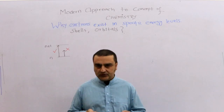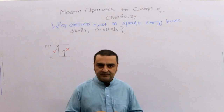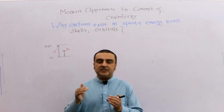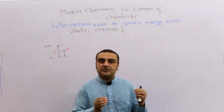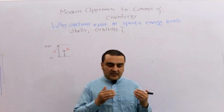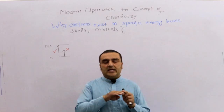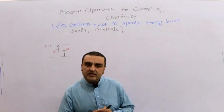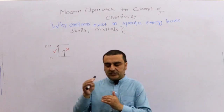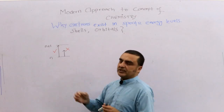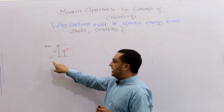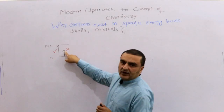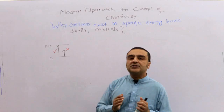Assalamu alaikum. I welcome all of you to the modern approach to the concept of chemistry. Today we will be studying why electrons exist at fixed energy levels and do not exist between those energy levels — just like why electrons are present in s, p, and d orbitals and not in between them. Suppose you excite an electron; it goes from n to n plus one, and it doesn't move to a half level or one-third level of energy. So what is the reason behind that?